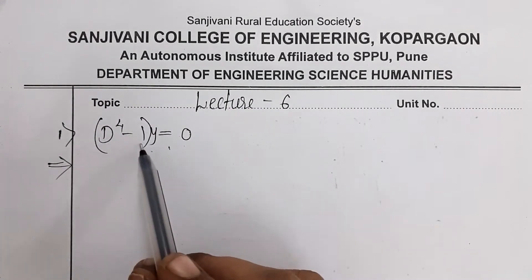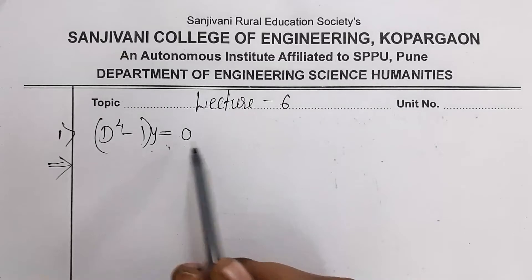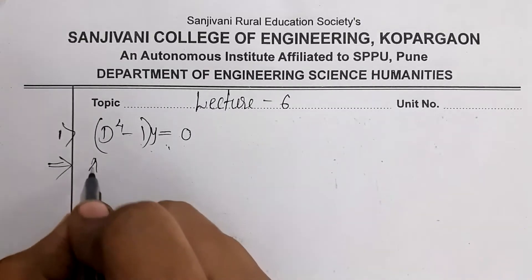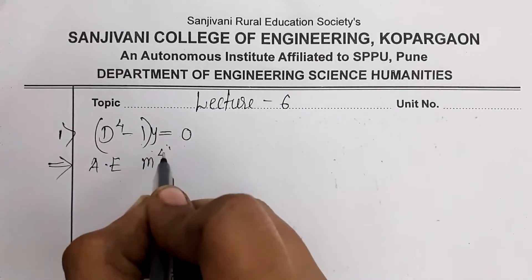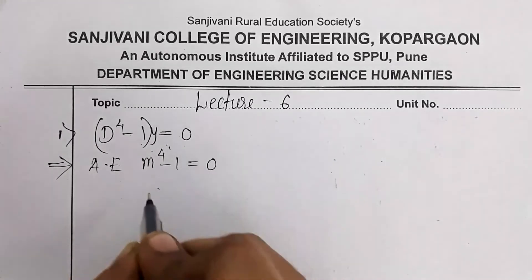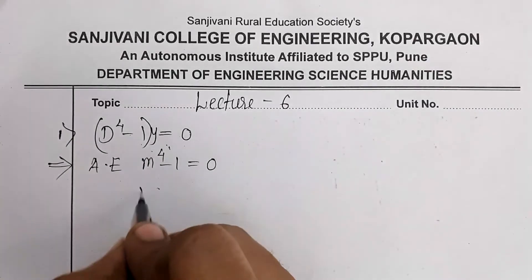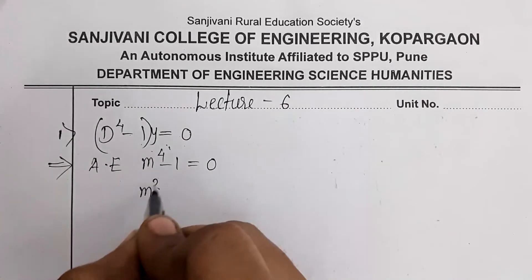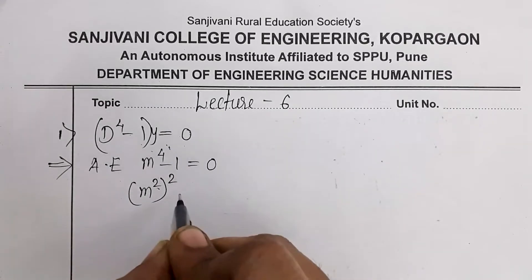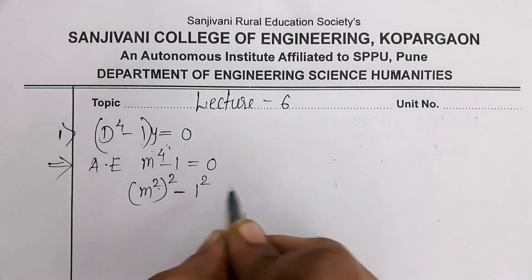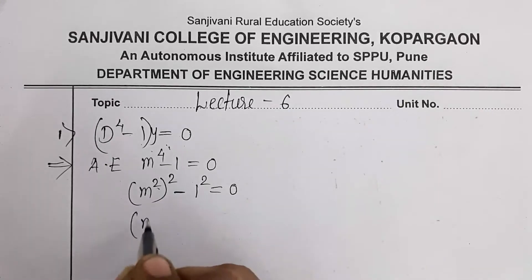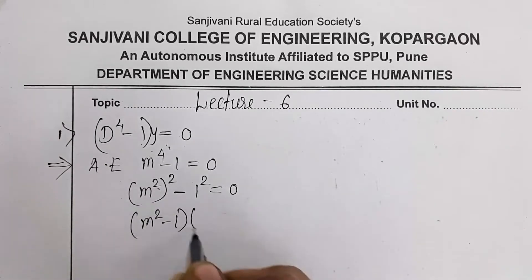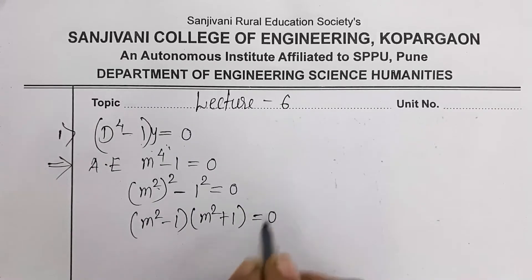So (D⁴ - 1)y = 0. The auxiliary equation is formed by replacing D by m, giving m⁴ - 1 = 0. Then m⁴ can be written as (m²)² and 1 as 1², so we factor it as (m² - 1)(m² + 1) = 0.